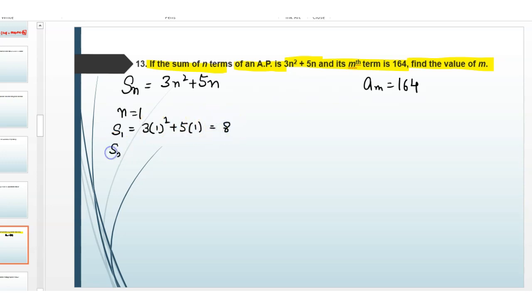And S2, here put n is equal to 2, then here 3 times 2 square plus 5 multiplied with 2 is equal to 22. Sum of first term is the first term, which is equal to 8. And the second term is equal to sum of 2 terms minus sum of first term, which is equal to 22 minus 8, which is equal to 14.